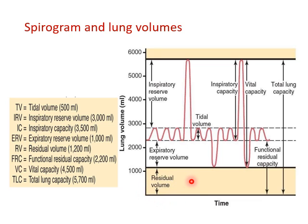With the spirometer you can measure the tidal volume and expiratory reserve, and from these volumes you can derive the inspiratory capacity, which equals the inspiratory reserve plus the tidal volume. We also have the functional residual capacity, which is where we usually start breathing from, equal to the expiratory reserve plus the residual volume. The total lung capacity equals the functional residual capacity plus the residual volume.